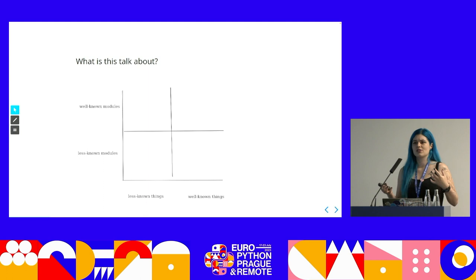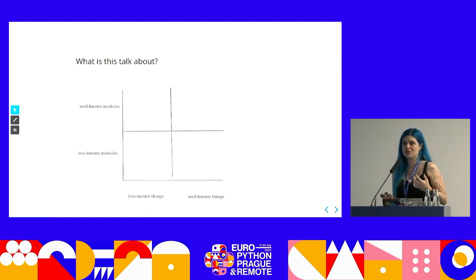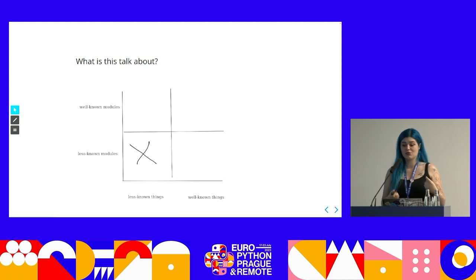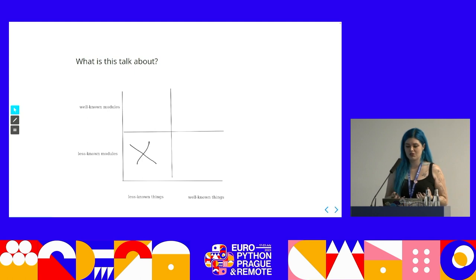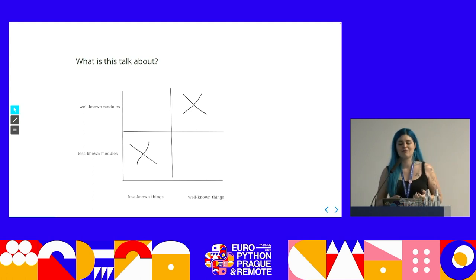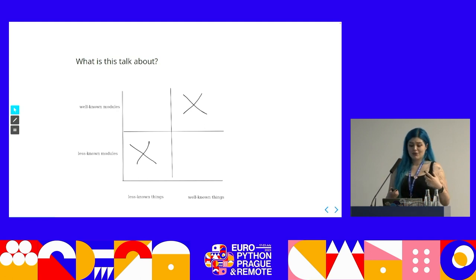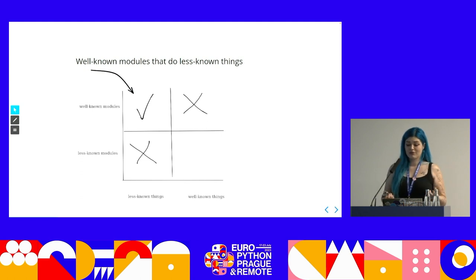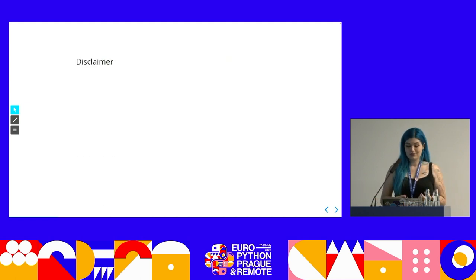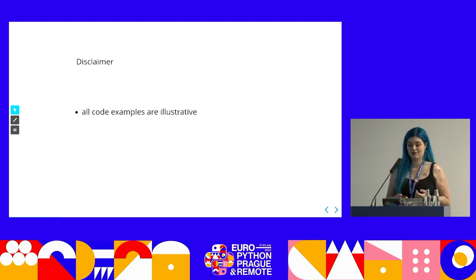I also thought about things we do as developers every day versus things we rarely do. I will not talk about less-known modules that do very specialized, less-known things, nor about the top five functionalities you'd find by Googling. Instead, I'd like to focus on the other two quadrants. And just a small disclaimer: all code examples shown are illustrative, and the specific use case for the standard library depends on your specific needs.